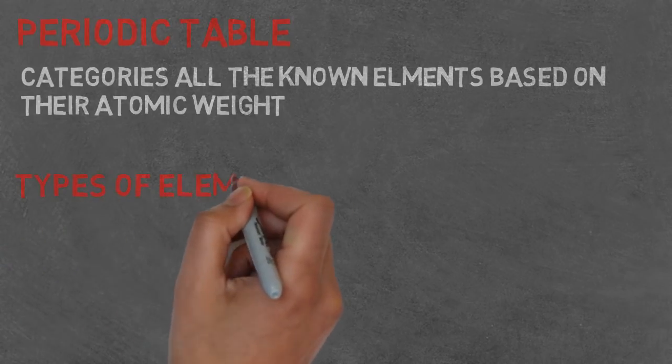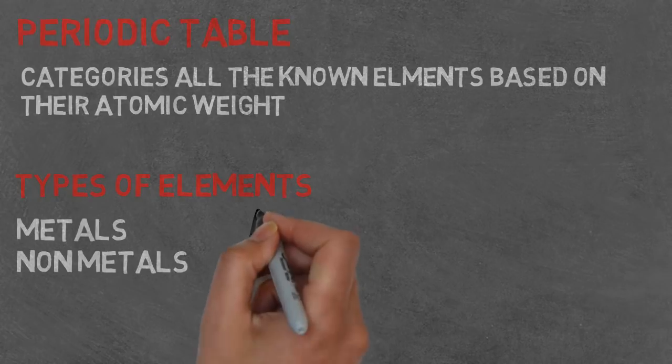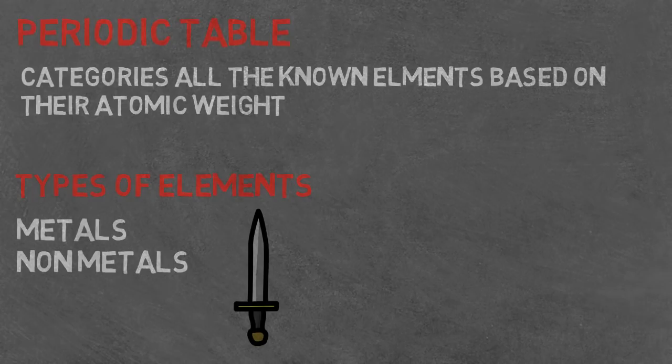There are two types of elements: metals and non-metals. Metals tend to be shiny, solid at room temperature, good conductors of heat and electricity, and malleable, while non-metals tend to be dull, don't conduct heat, and are brittle.